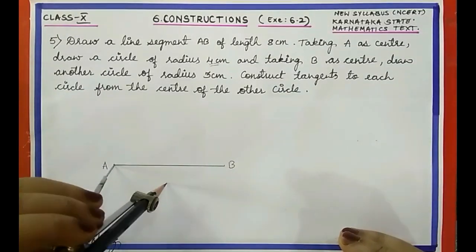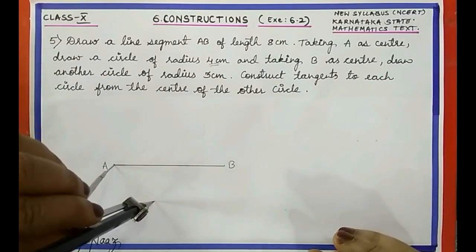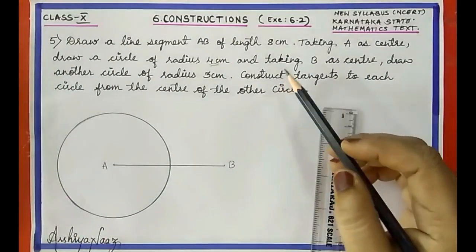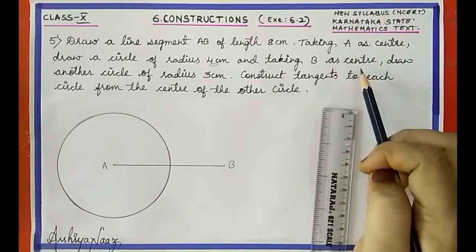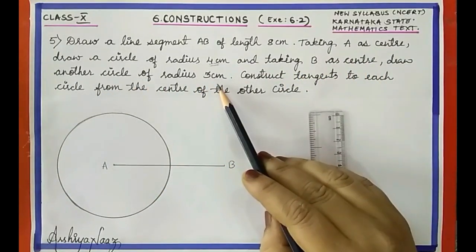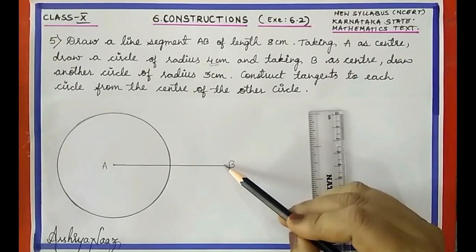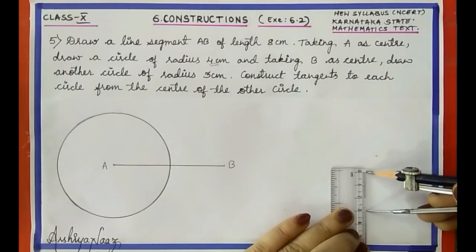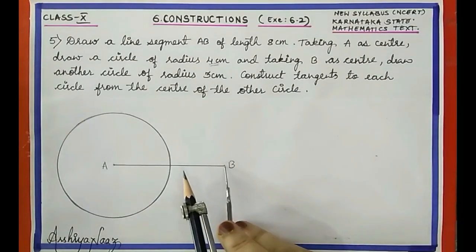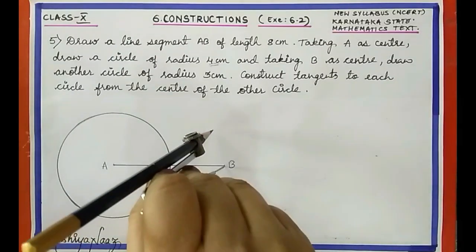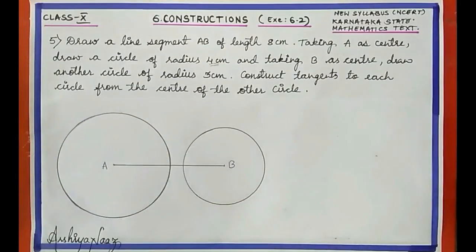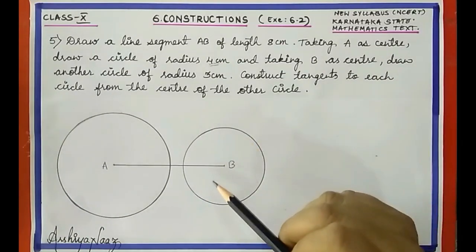Now with A as center draw the circle. Then taking B as center draw another circle of radius 3 centimeter. Take the radius 3 centimeter and with B as center draw the circle.